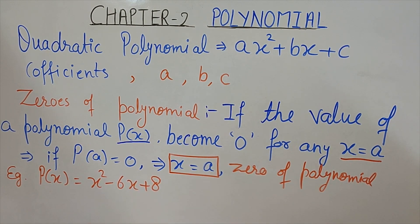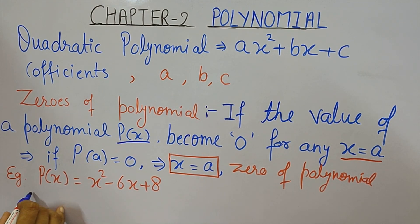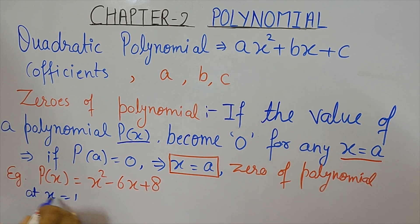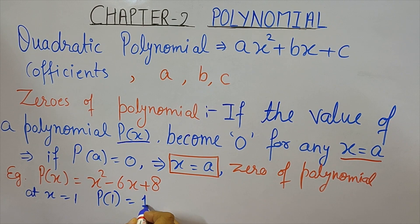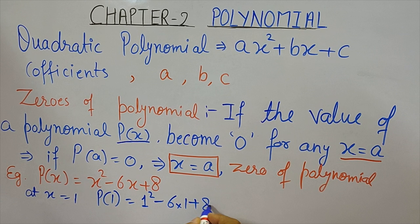Let us take an example. Consider the polynomial x² - 6x + 8. Let us calculate its value at x = 1. We replace x by 1, so we get 1² - 6×1 + 8, which gives us 3.